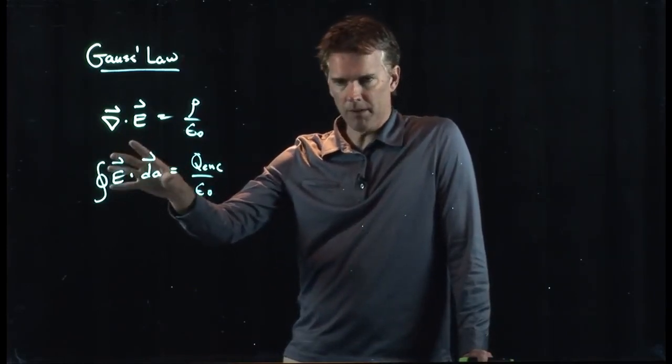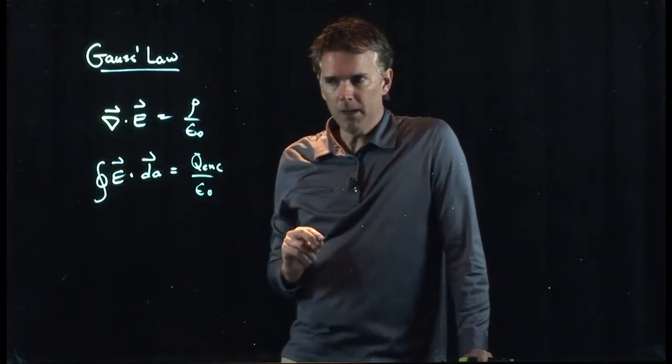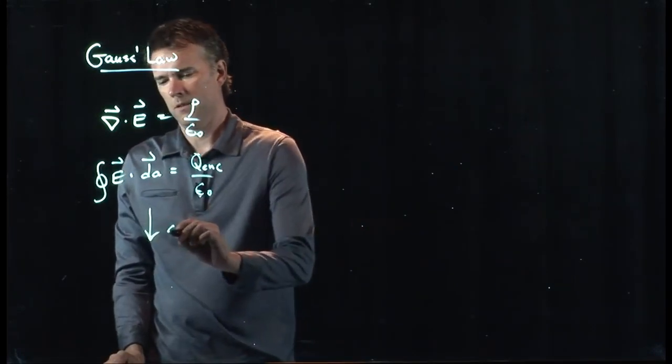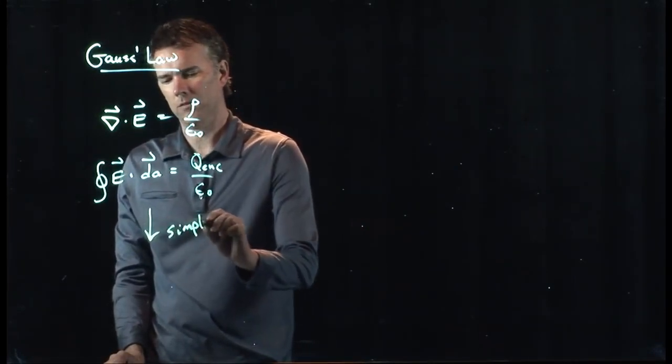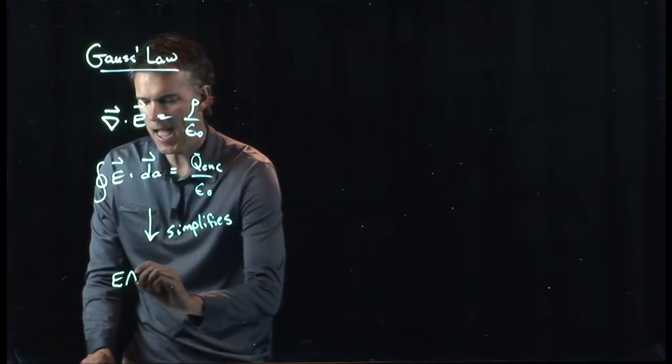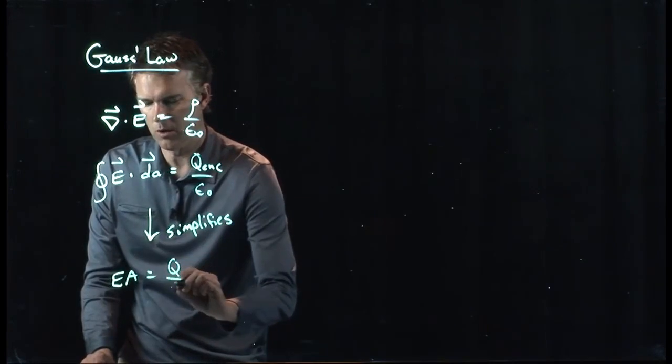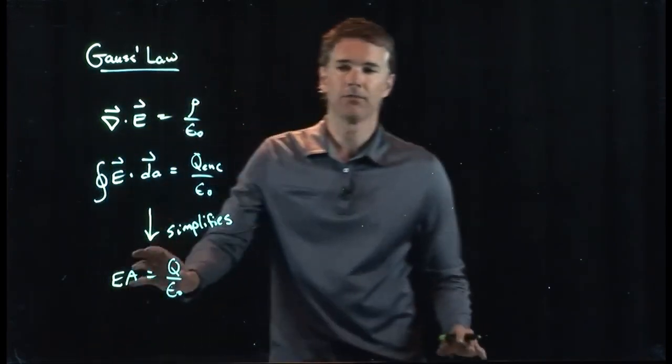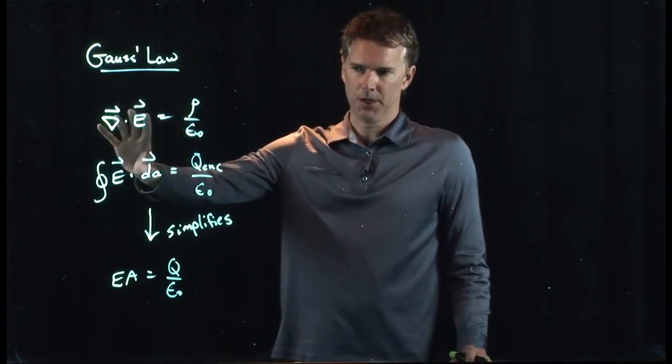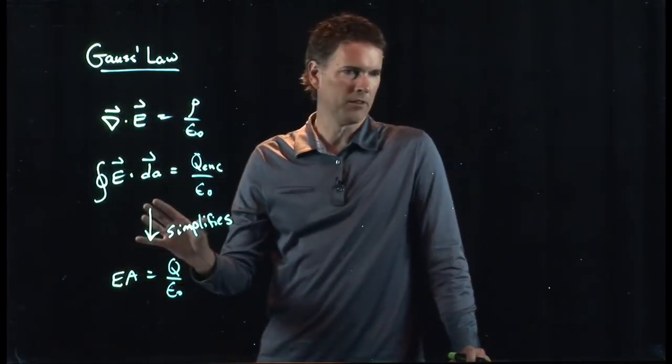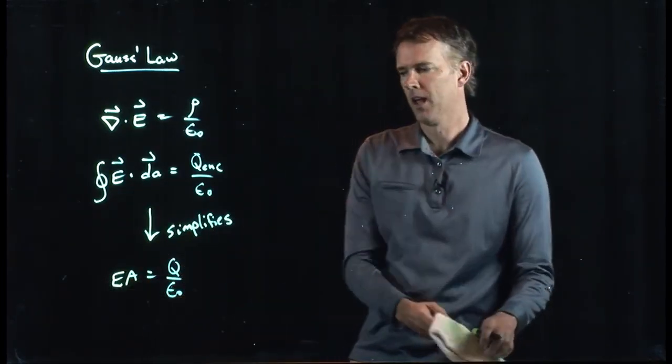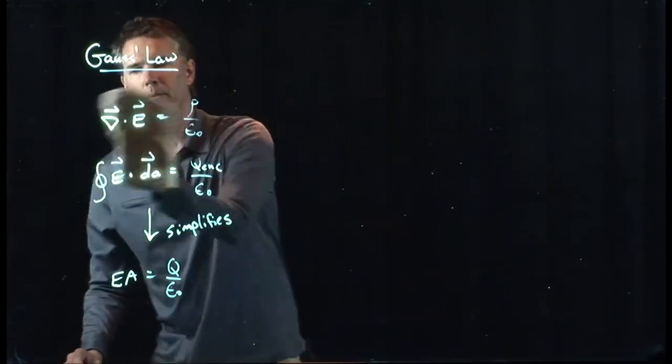This integral stuff maybe is a little complicated, but it's really not that bad. This simplifies greatly in a lot of cases to the following: EA equals q over epsilon naught. And that's what we talked about today in class. Know that there is a lot more to it, but it simplifies in a great number of problems to just this. E times A equals q over epsilon naught. So let's attack it from that point of view.